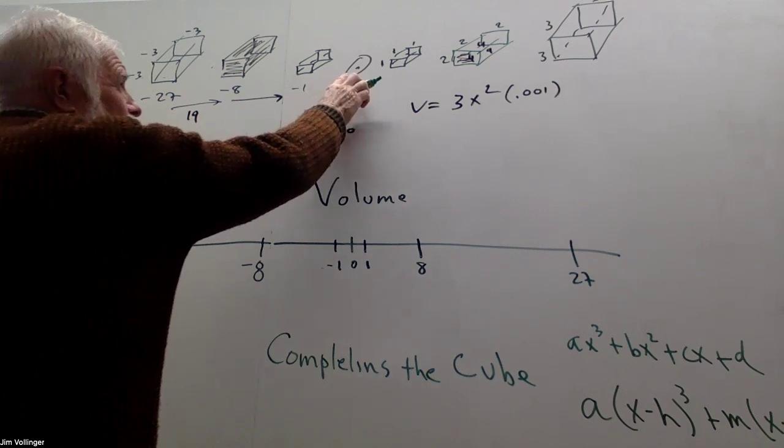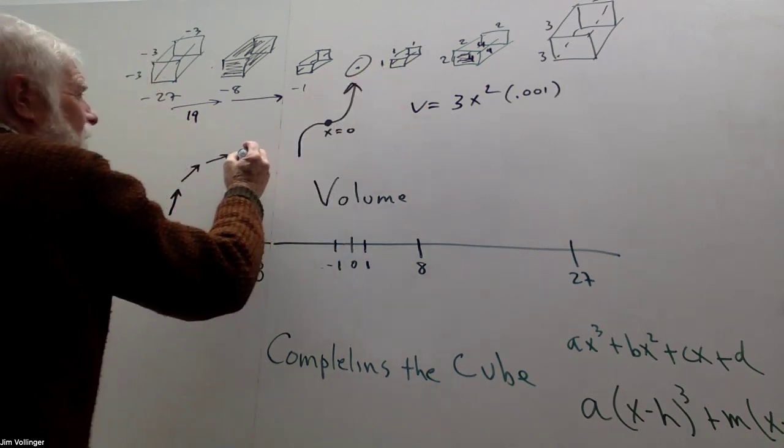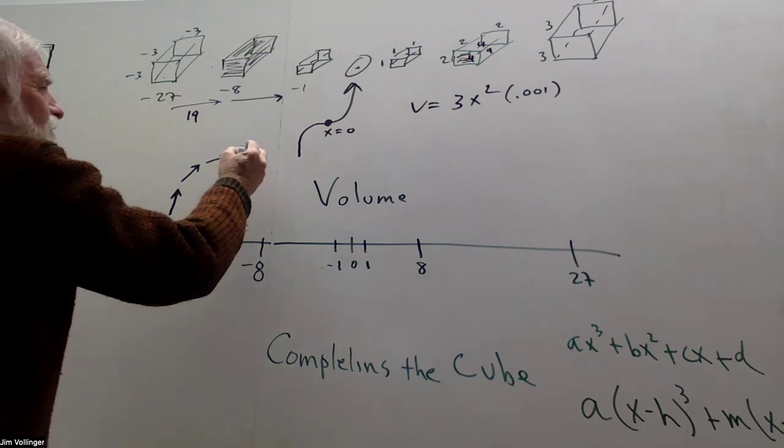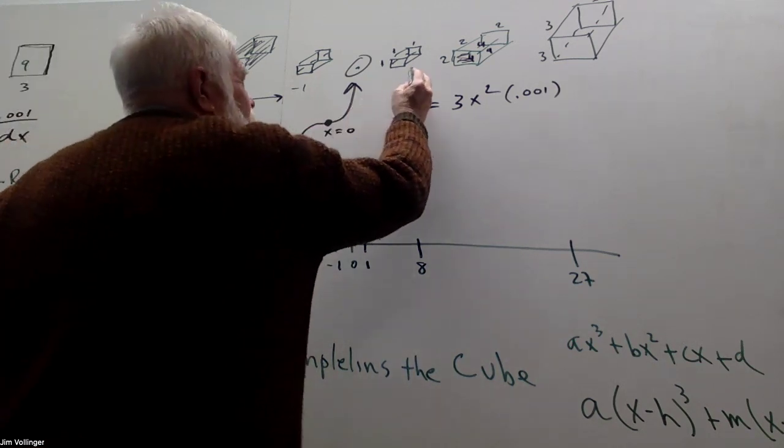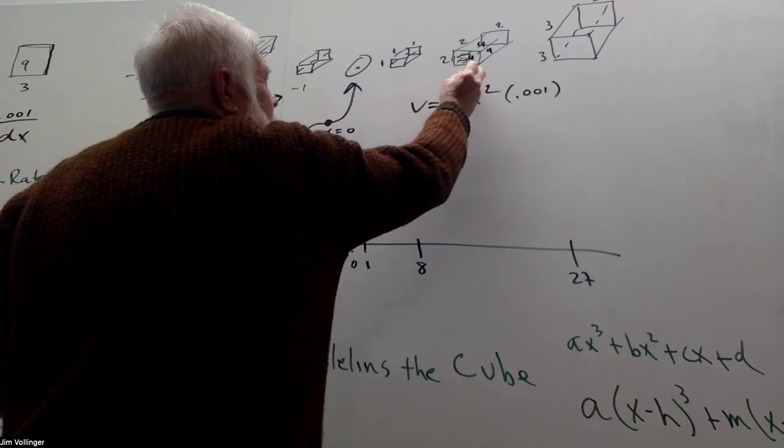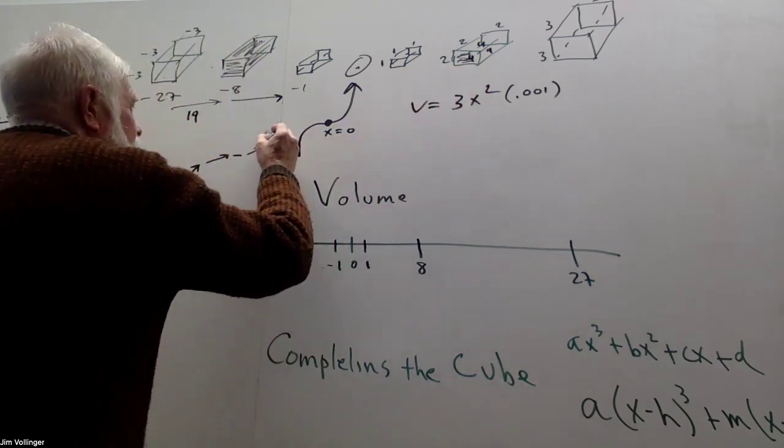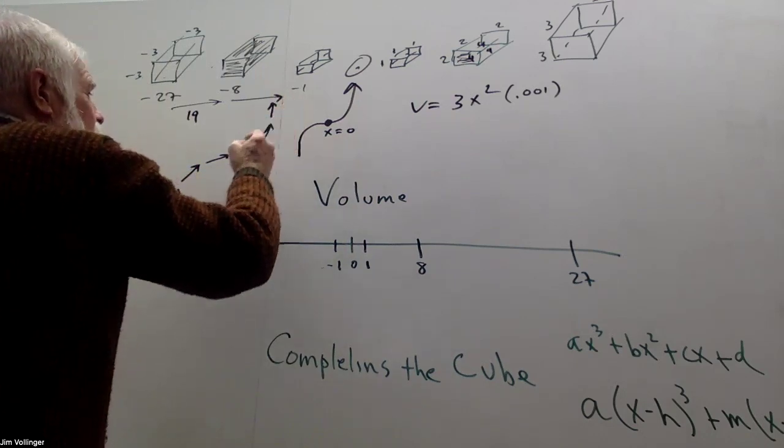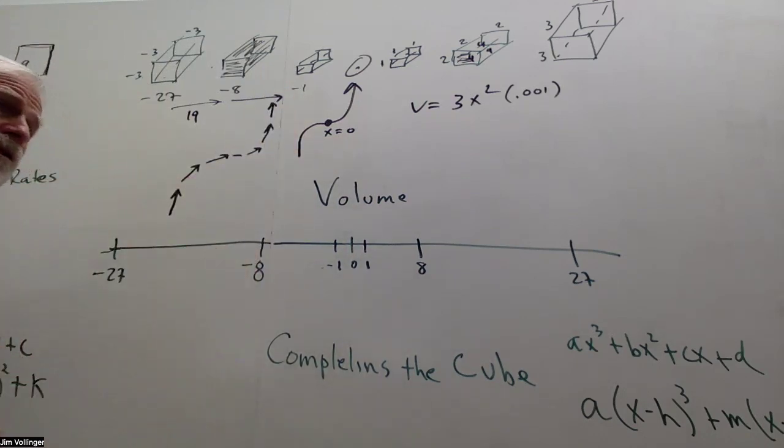And then from 0 to 1, I'm going up at 3x squared, right? But I'm doing average rate of change. So, I'm going up 1. What's the average rate of change from 1 to 8? 7 units. We've got some symmetry here. And then you're going up 19 to 1. And I hope you can get a feel for the cubic. A little deeper feel for the cubic.